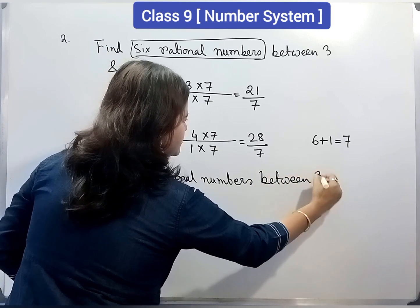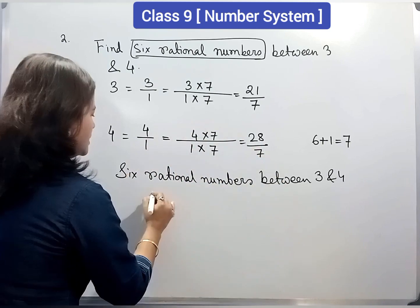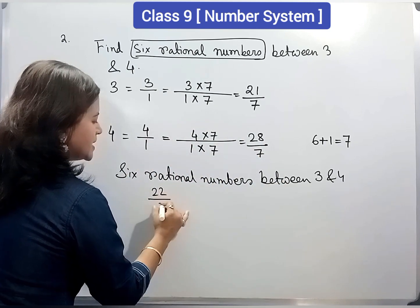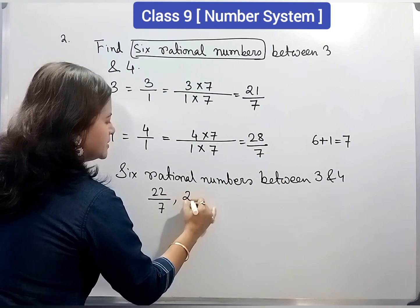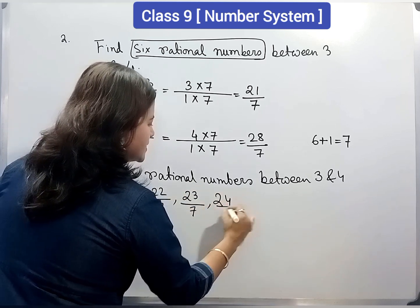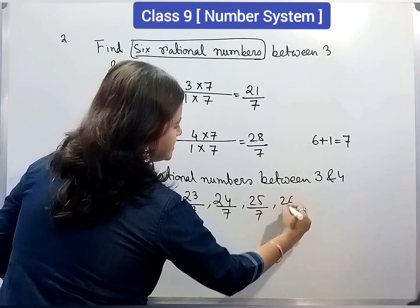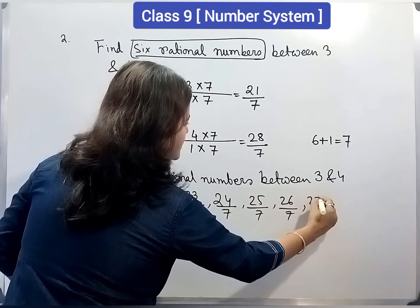Between 3 and 4. 21 by 7, next number is 22 by 7, then 23 by 7, then 24 by 7, then 25 by 7, then 26 by 7, then 27 by 7.